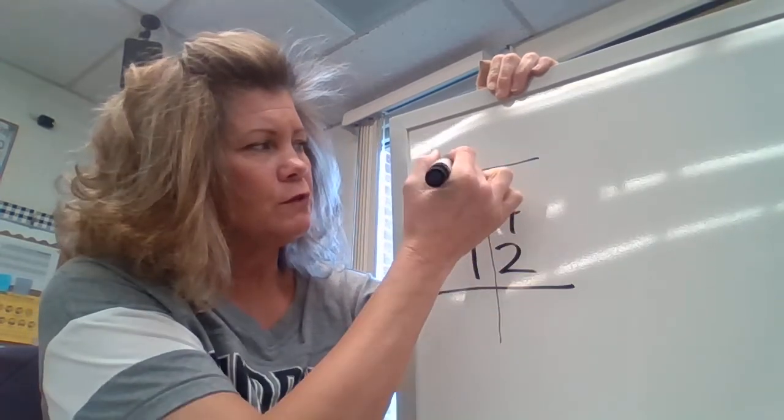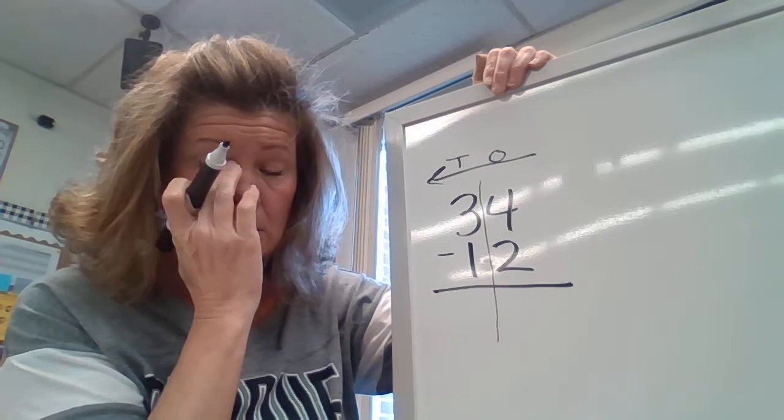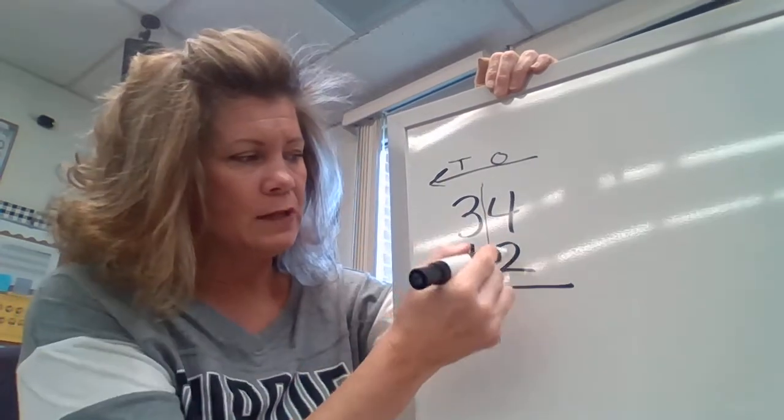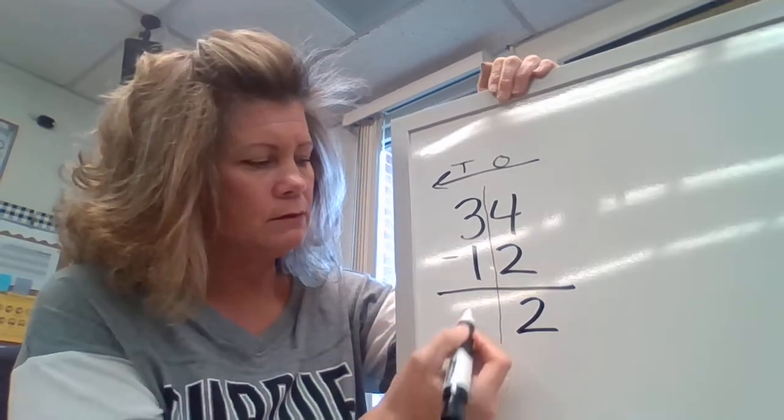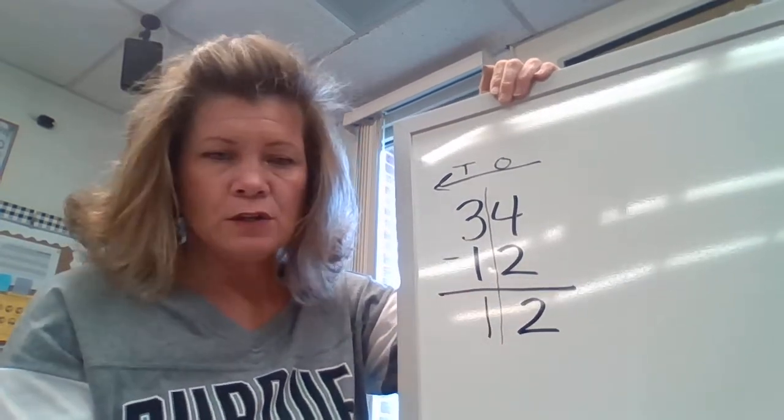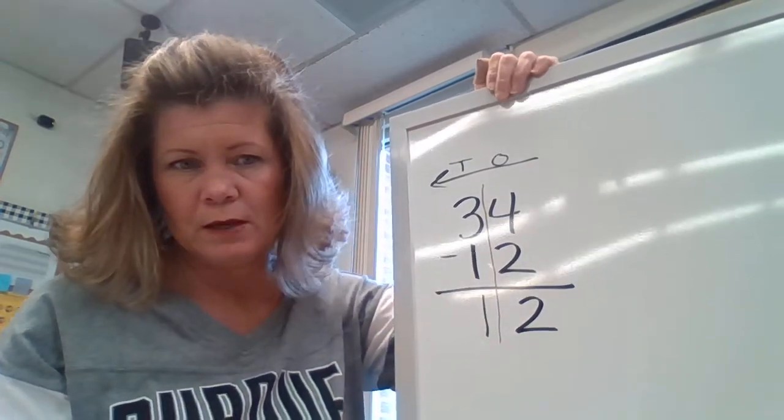So you're gonna do the ones first. Remember these are the tens and these are the ones. That's your columns. So you're gonna do four minus two. Four minus two is two. Then you can do the tens. Three minus one is one. So now you look at it like it normally is. 34 minus 12 is 22.